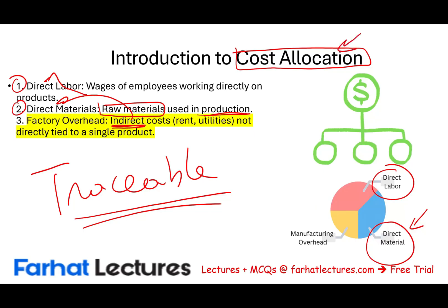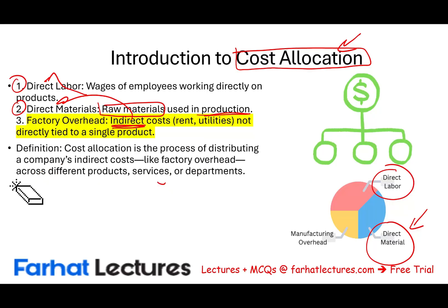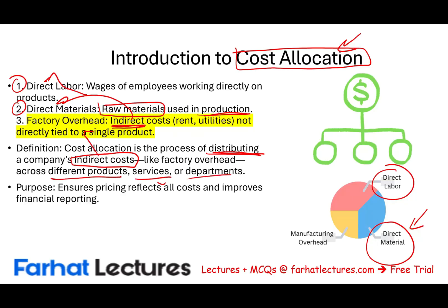This is what we mean by cost allocation — basically finding a method to allocate. The definition of cost allocation is the process of distributing. You don't know for sure, but you're finding a reasonable, logical method that connects the cost to the product. That cost is factory overhead. It's the process of distributing a company's indirect costs — factory overhead — across different products, services, or departments. The purpose is to make sure pricing reflects all costs and improves financial reporting, because we want to know exactly how much something is costing us. But the problem with factory overhead is we have to allocate it; we cannot trace it directly.